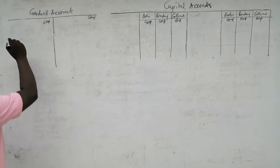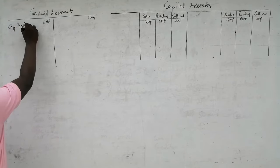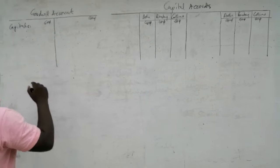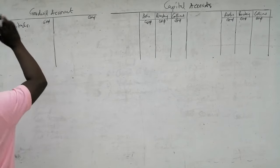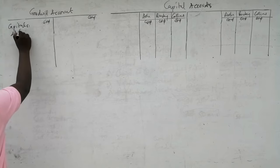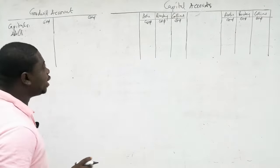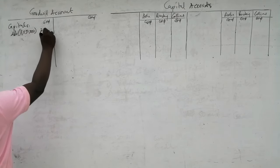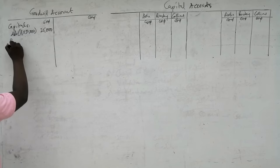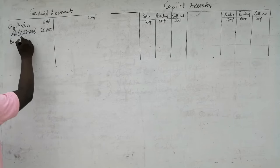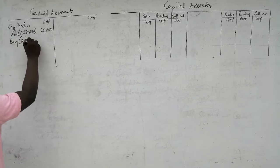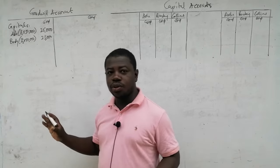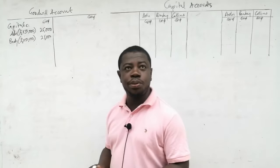We begin the same way. We will credit the capitals and then debit the Goodwill of 50,000, sharing in the old ratios. Edu enjoys half because the old ratios were shared equally — half of 50,000 is 25,000. Boateng also enjoys half of 50,000, which is also 25,000. This is how it was in the first scenario and how it begins with the second one.